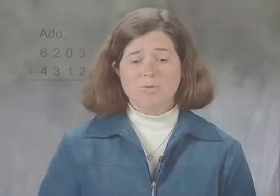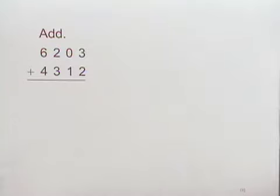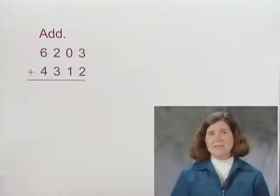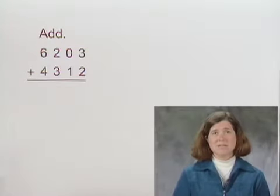In this problem we're asked to add two whole numbers. We'll add 6,203 and 4,312. We'll add the ones, then the tens, then the hundreds, then the thousands.